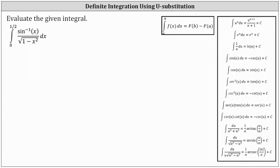We are asked to evaluate the given definite integral. Analyzing the form of the integrand function, because the denominator is the square root of the quantity one minus x squared, we might be thinking we should apply the integration formula shown here, where the integral of du divided by the square root of the quantity a squared minus u squared equals arc sine of u divided by a plus c. But that's not the case here because the numerator is inverse sine of x.